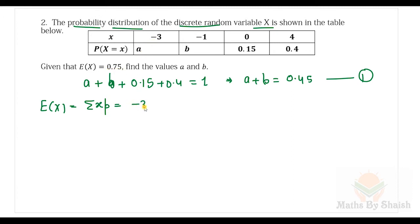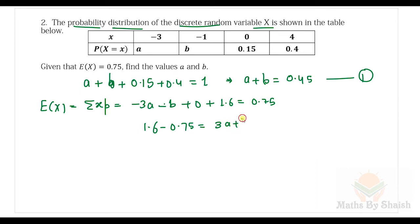For the second equation, E(X) = 0.75 means Σ x·p = 0.75. So: (−3)a + (−1)b + (0)(something) + 4 × 0.4 = 0.75, which gives −3a − b + 1.6 = 0.75. Rearranging: 3a + b = 1.6 − 0.75 = 0.85. That is equation two.